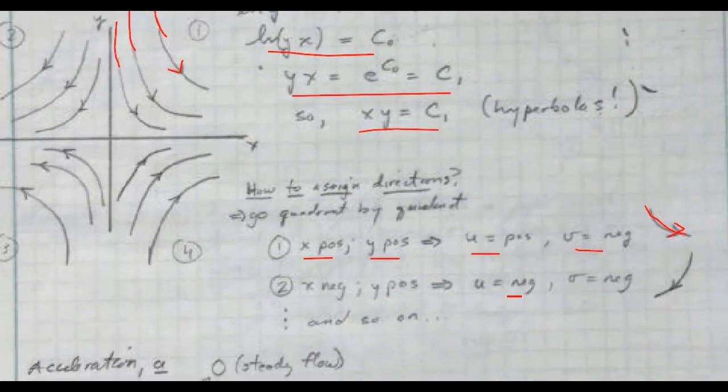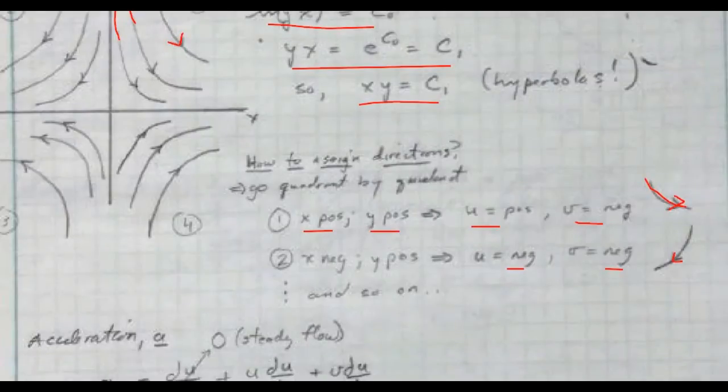Let's look at the second quadrant. So in the second quadrant, x is negative, but y is still positive, so u becomes negative now, and v stays negative. So now it's going to the left and down, like so. So you could carry that out for the other two quadrants as well.